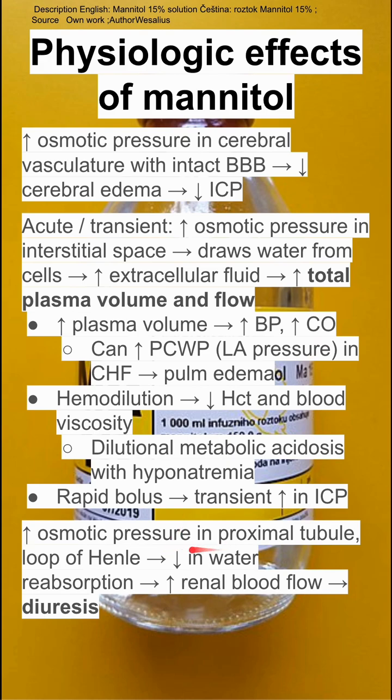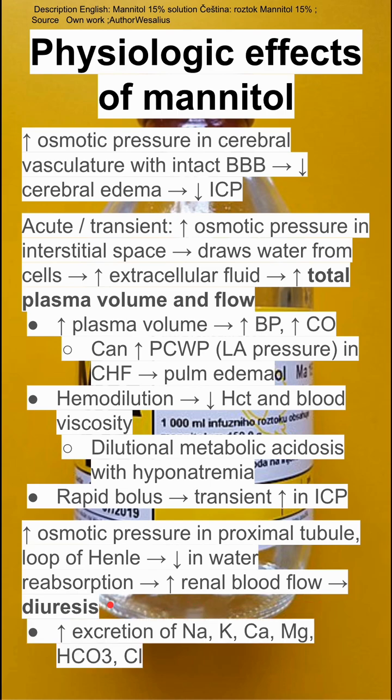Increased osmotic pressure in the kidney, specifically in the proximal tubule and the loop of Henle, can decrease your water reabsorption in the kidney. This, in addition to the increased renal blood flow, can lead to a diuretic effect.